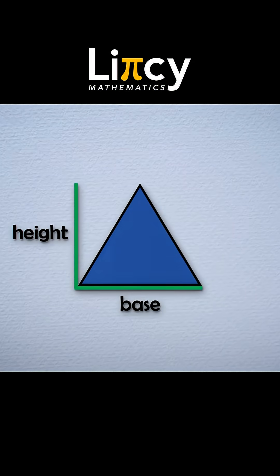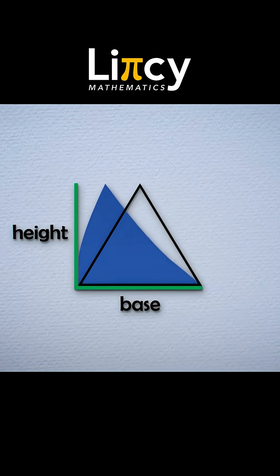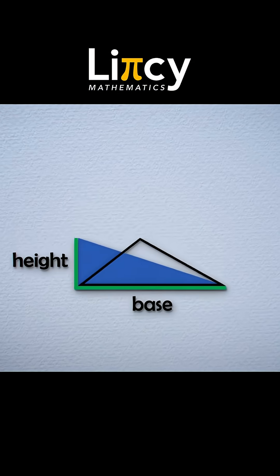It would be much easier to deal with if our triangle had a right angle in it. So we can pull the top of the triangle over so it lines up to create a right angle. Sliding over the top like this hasn't changed the overall area.